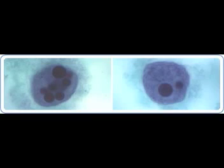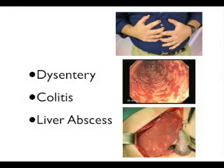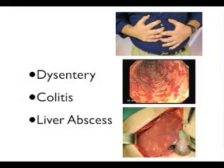Entamoeba histolytica is a protozoan parasite that, in most cases, harmlessly resides in the colon. However, it has the capability to cause dysentery, colitis, and liver abscess.